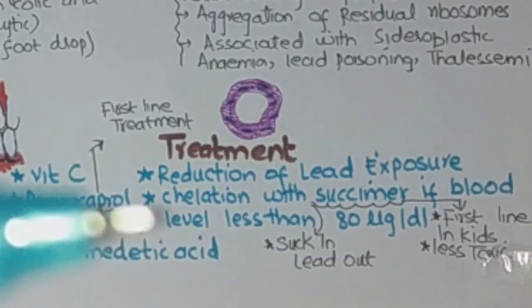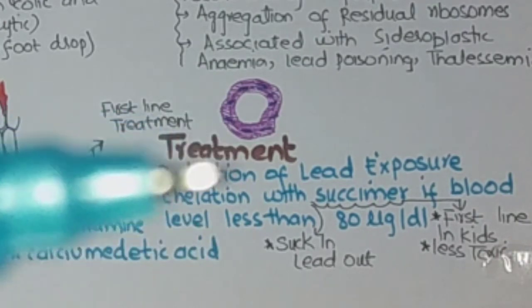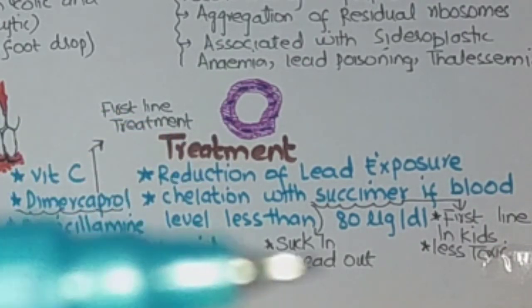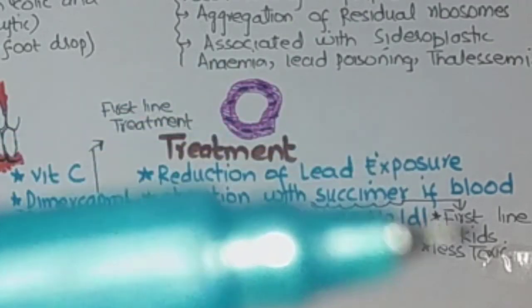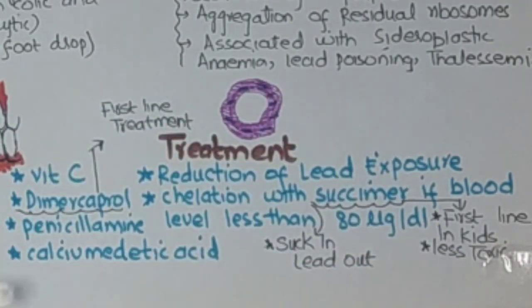How are you going to treat the patient? You can give vitamin C. First, you have to reduce exposure to lead. Dimercaprol is the first-line treatment, but in children, succimer — which is less toxic — is given. Other options include penicillamine and calcium EDTA.